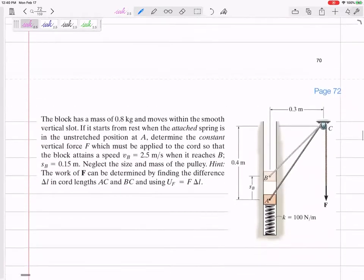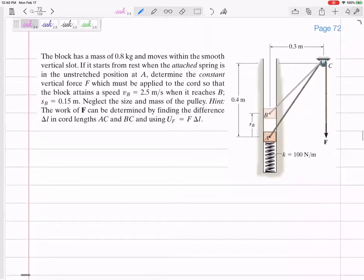Next problem, we're sticking in this section: sum of all work equals change in kinetic energy. Sum of all the work equals change in kinetic energy. What type of work could I have? I like to think of three different types: gravity, spring, force times distance.